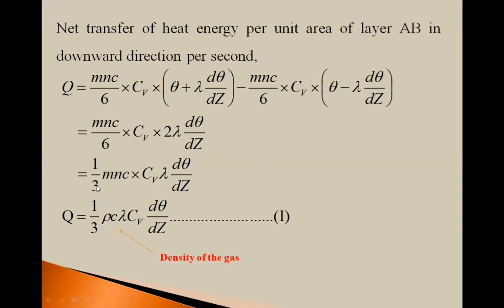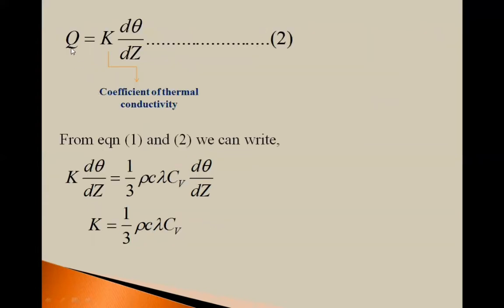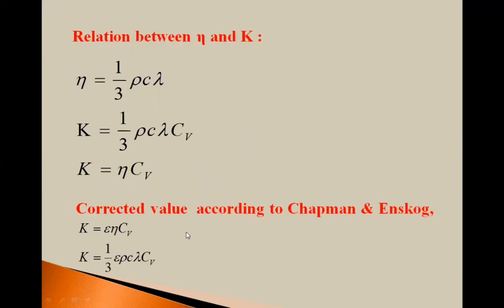So Q = (1/3)ρcλCv·(dθ/dz), where ρ = mn is the density of the gas — this is equation 1. You know Q = K·(dθ/dz), where K is the coefficient of thermoconductivity. Equating both expressions, K·(dθ/dz) = (1/3)ρcλCv·(dθ/dz), and cancelling dθ/dz, we get K = (1/3)ρcλCv.